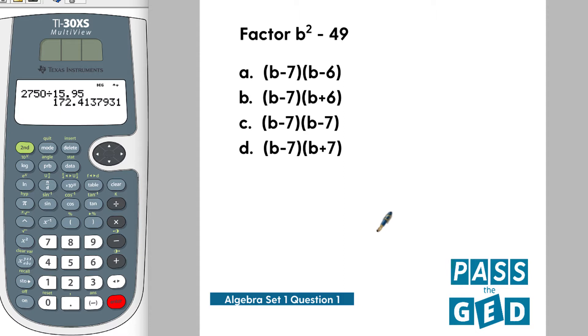Algebra set one question one says factor b squared minus 49. If you look at your answer choices, you've got negative 7 and negative 6, so all the answers have 7 and 6 in them.